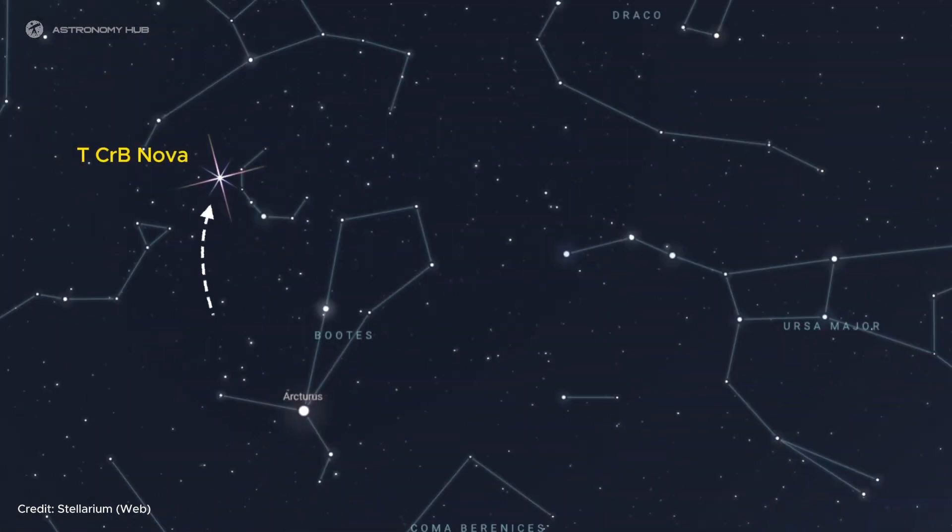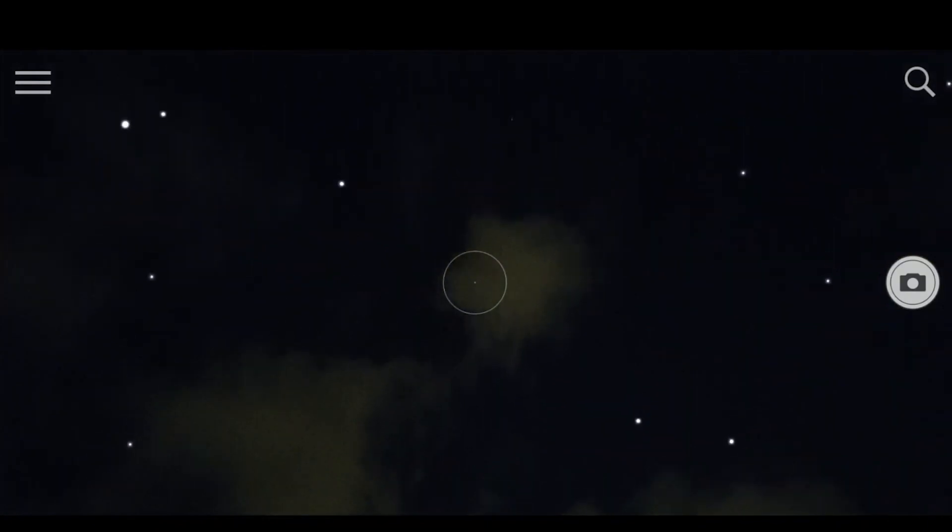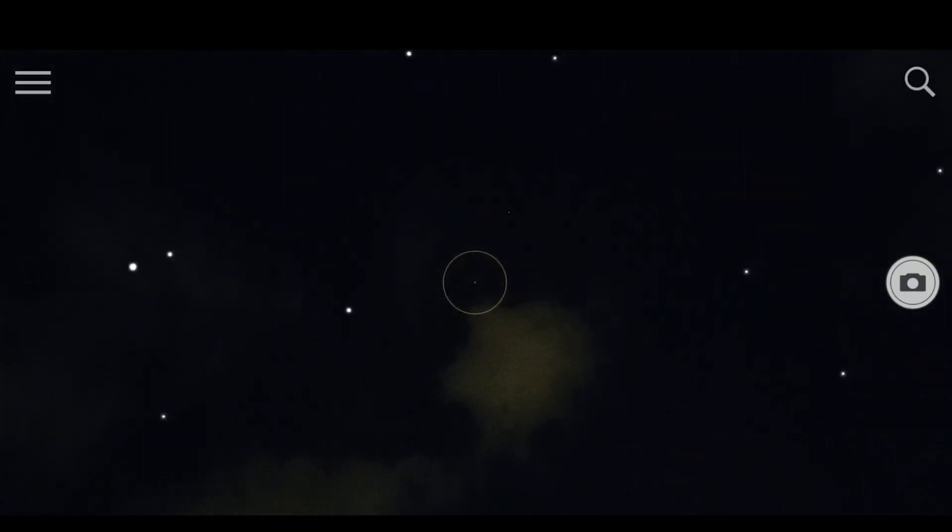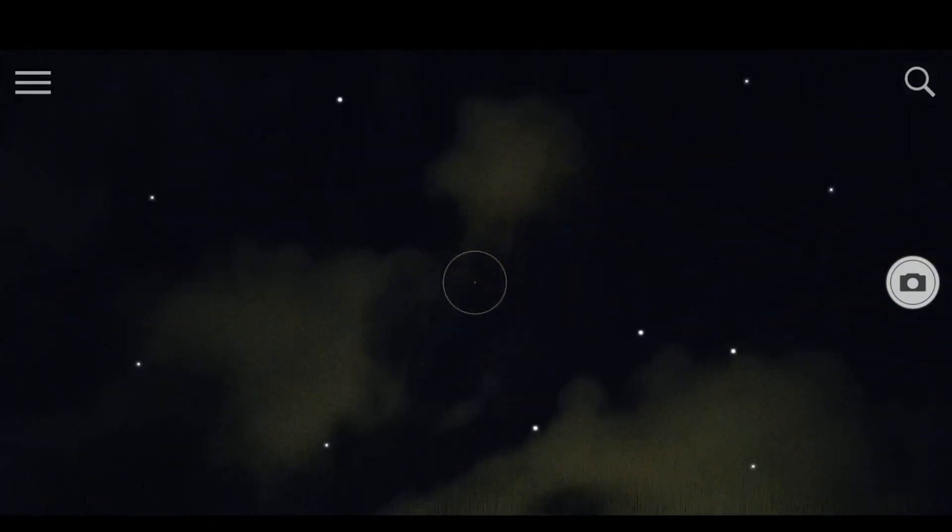It's located in the Northern Hemisphere, so make sure you're facing the right way. If you have trouble finding it, there are plenty of stargazing apps and websites that can help you locate the constellation.